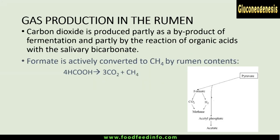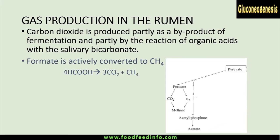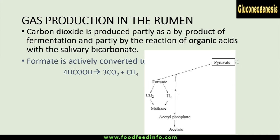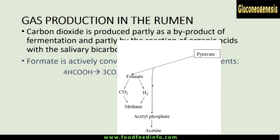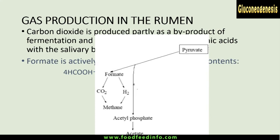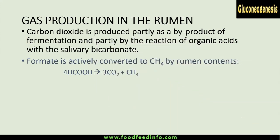There is a formation of formic acid or formate in the rumen. Carbon dioxide is produced partly as a by-product of fermentation, particularly when pyruvic acid is converted into acetate, forming formate. The second pathway for CO2 production is by the reaction of organic acids with salivary bicarbonate. Formate is first converted into carbon dioxide and hydrogen; because of anaerobic conditions, hydrogen has no sink, so it combines with a carbon molecule to make methane gas.